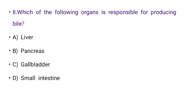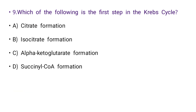Next: Which of the following organs is responsible for producing bile? Options: liver, pancreas, gallbladder, or small intestine. The right answer is A: liver.